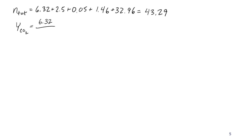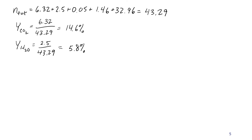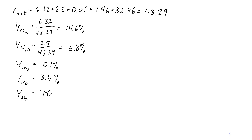For each component, the molar or volumetric concentration is its moles divided by the total. For CO2: 6.32 divided by 43.29 gives 14.6%. For water: 2.5 divided by 43.29 gives 5.8%. For SO2: 0.1%. For O2: 3.4%. And for N2: 76.1%.